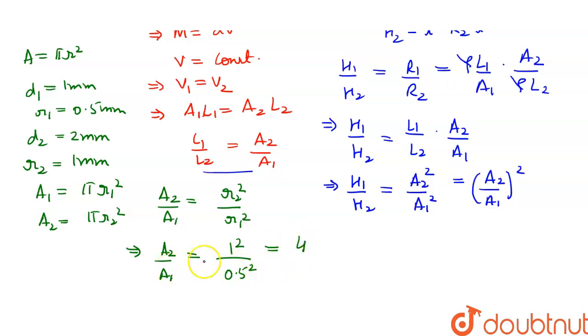Now let's substitute the value of A₂/A₁ in this equation. This will give us H₁/H₂ = (4/1)² which comes out to be 16/1.